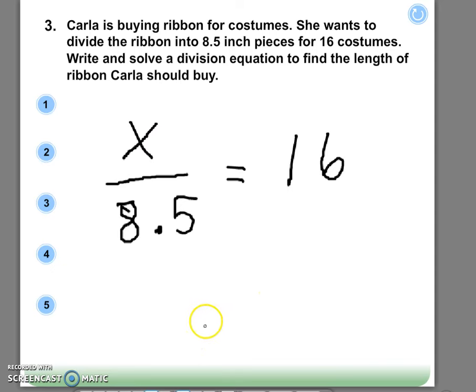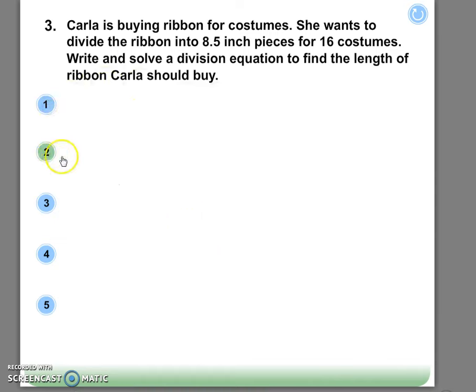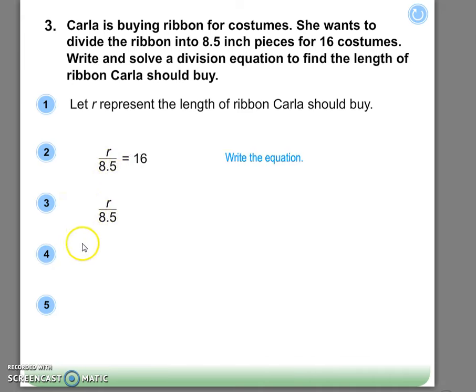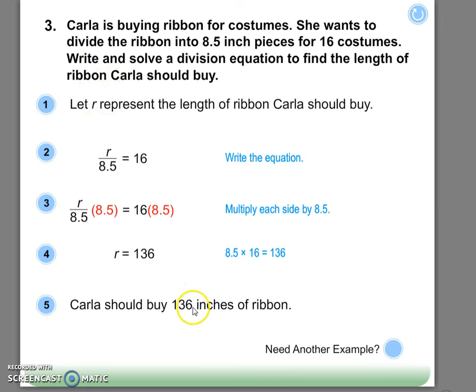Now that we have our equation set up, the only thing left to do is to multiply both sides by 8.5. So there's our R over 8.5 equals 16. By multiplying both sides by 8.5, we're getting R on the left since they cancel out. And when we multiply 16 by 8.5, you should get a total ribbon length of 136 inches.